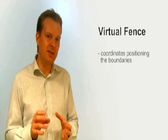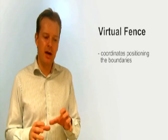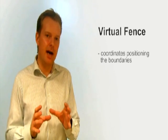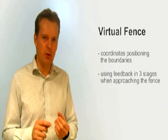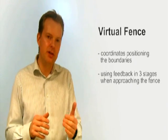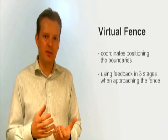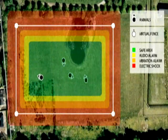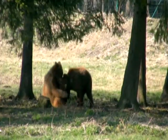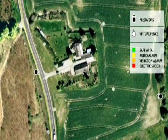A virtual fence only exists on the CPU as coordinates representing the boundary. For keeping the animal inside the fence, I'm using feedback — force feedback from a certain distance. When the animal gets closer to the fence, it receives a different type of feedback. I have three types of feedback: an audible alarm, vibration, and then an electrical shock. This is all useful for keeping an animal inside or outside the fence when it comes to predators.